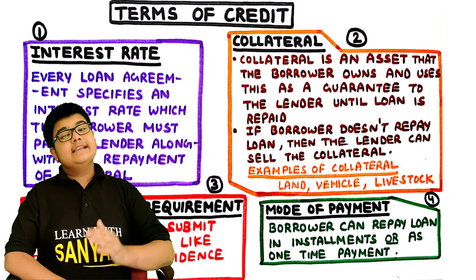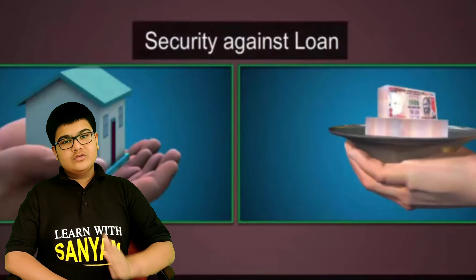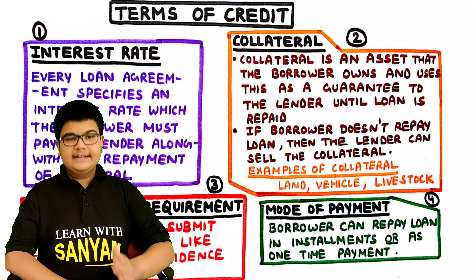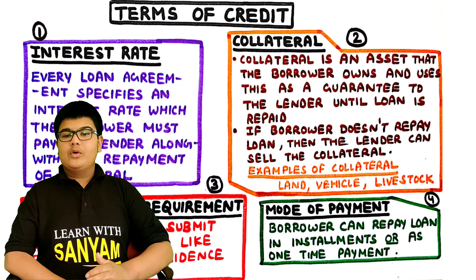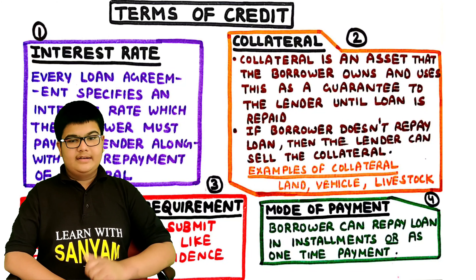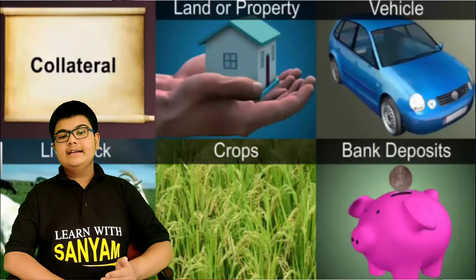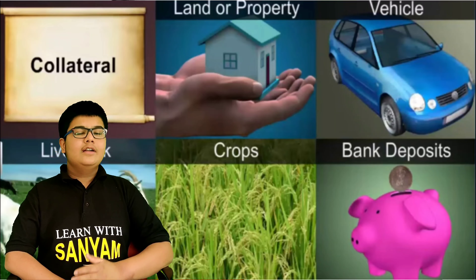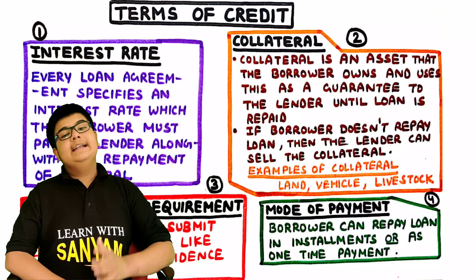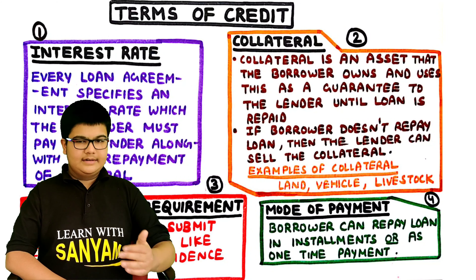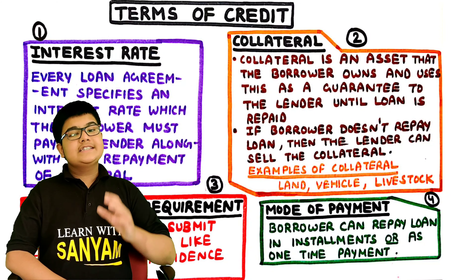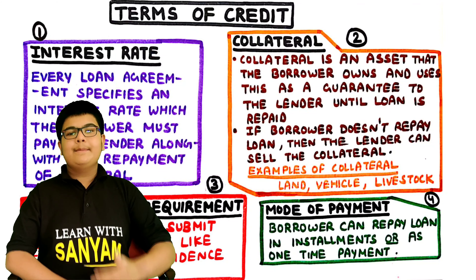Collateral is an asset that the borrower owns and uses as a guarantee to the lender until the loan is repaid. If the borrower doesn't repay the loan, then the lender can sell the collateral. Collateral can be anything such as land, vehicle, or livestock. Basically, collateral is a security — if the borrower does not repay the loan on time, the lender will sell the collateral and take his money back.